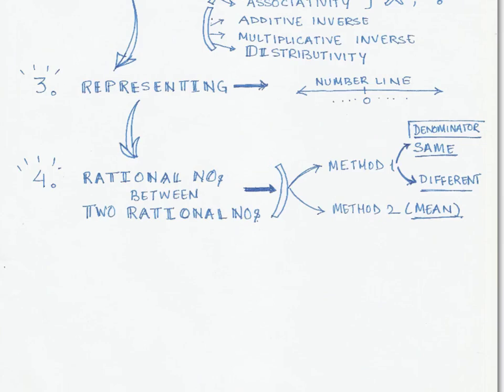Once we look at the representation of rational numbers, we will look at another important part of finding out how many rational numbers exist between any two rational numbers. And in specific, we are going to look at two methods.